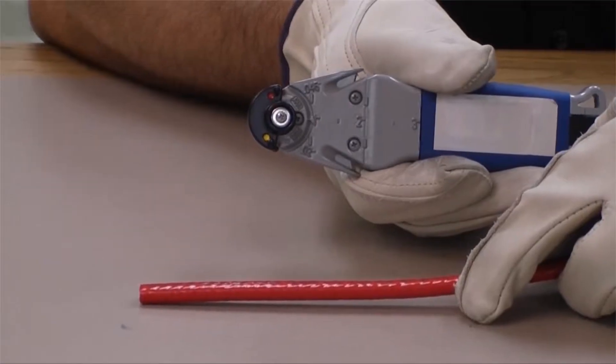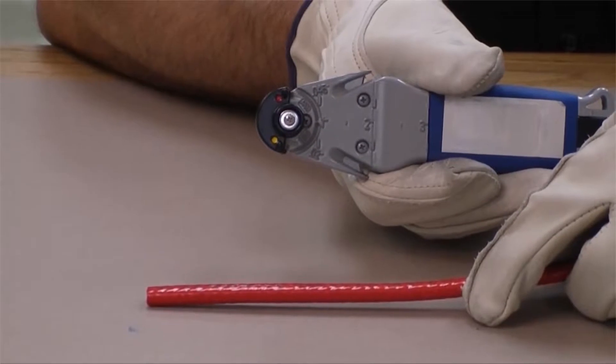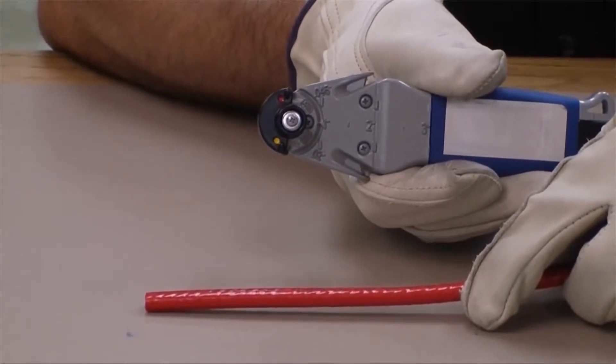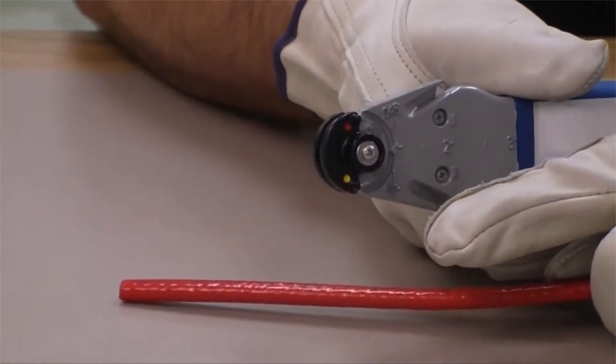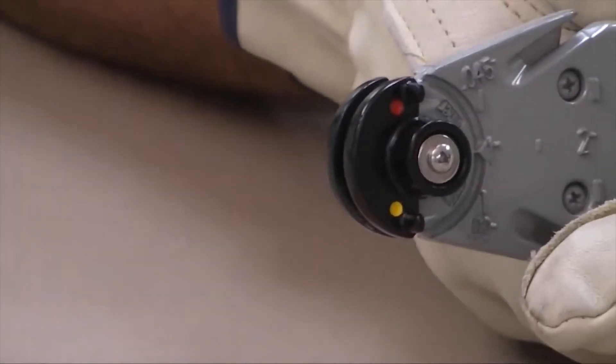For Raychem XTV and KTV cables, to strip the outer jacket, use the blade marked outer with the yellow dot to score around the outer jacket of the heating cable.